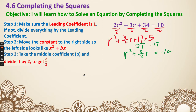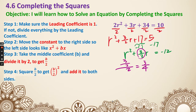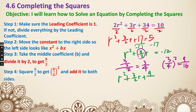Step 3: take the middle coefficient and divide by 2. The middle coefficient is 3 halves, and 3 halves divided by 2 is 3 fourths. Step 4: square what we just found. 3 fourths squared gives us 9 over 16. We add it to both sides, so the equation becomes r squared plus 3 halves r plus 9 over 16 equals negative 12 plus 9 over 16.